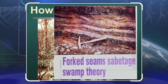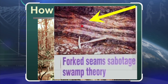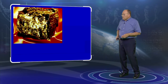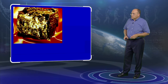Here we see several coal seams. I want you to concentrate right here — do you notice that at that very point, there's one coal seam that branches into two? Forked branching coal seams prove that this is material that was all deposited at the same time, rapidly. And recent research has shown this.